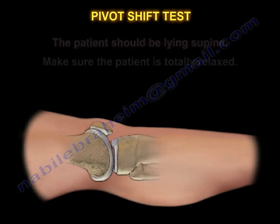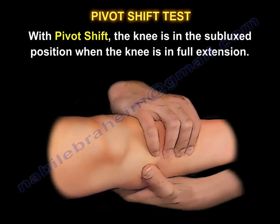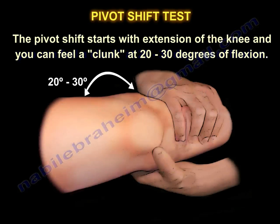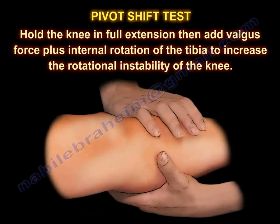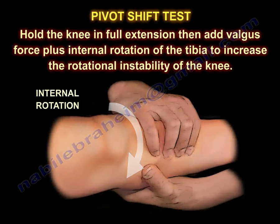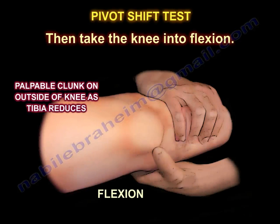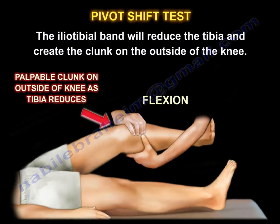To perform the pivot shift test, the patient lies supine and must be totally relaxed. With the pivot shift, the knee is in the subluxed position when in full extension. Starting with the knee in full extension, add a valgus force plus internal rotation of the tibia to increase rotational instability. Then take the knee into flexion — you feel a palpable clunk on the outside of the knee as the tibia reduces. This palpable clunk is very specific for an ACL tear; the iliotibial band reduces the tibia and creates the clunk.